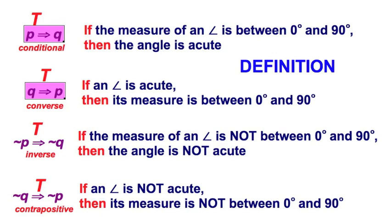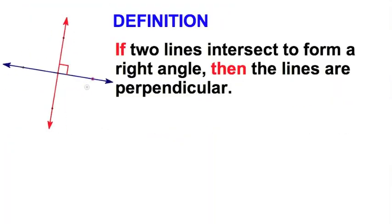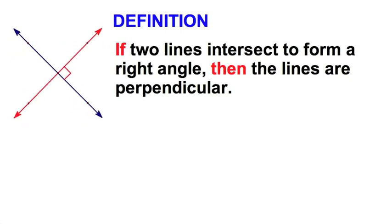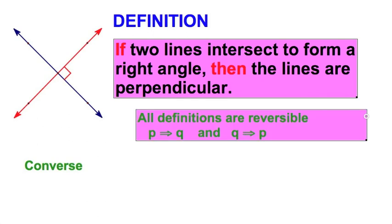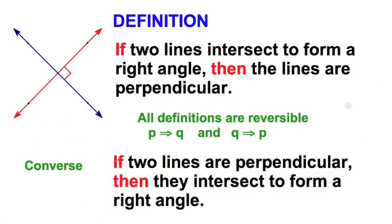So let's try one more example. Let's try another definition. Here I've got a pair of lines that intersect to form a right angle. And I'm going to make this statement. If two lines intersect to form a right angle, then the lines are perpendicular. Now, I've stated that as a definition. And I'm going to let you in on a secret. All definitions are reversible. So if P implies Q, then Q implies P. So let's just take this and write the converse of my original definition. I'll just reverse it. If two lines are perpendicular, then they intersect to form a right angle.